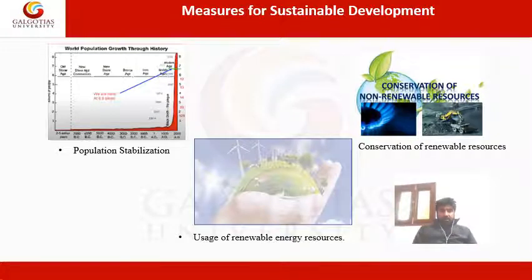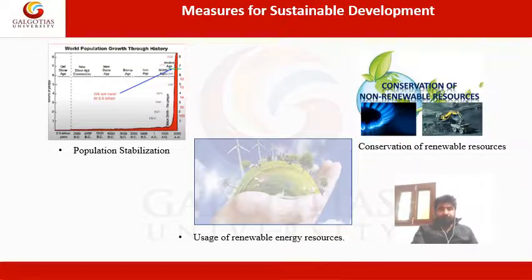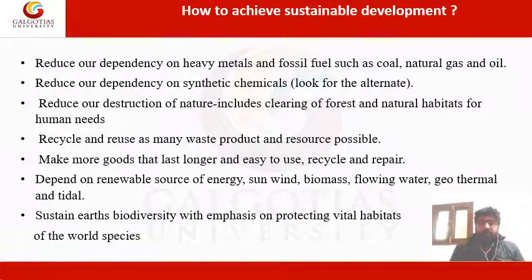Another measure is the usage of renewable energy resources. The ongoing scarcity of conventional fuels is demanding that human beings shift from conventional fuels to renewables like wind energy, solar energy, and hydrogen as a fuel. This will help control the scarcity of conventional fuels. The third measure is conservation of renewable resources.